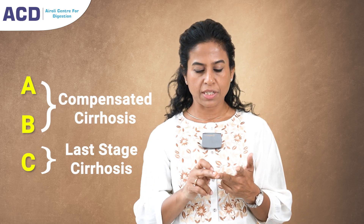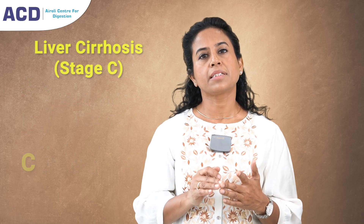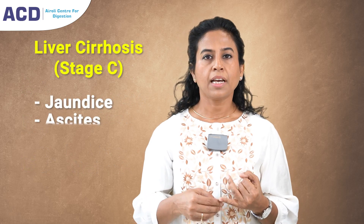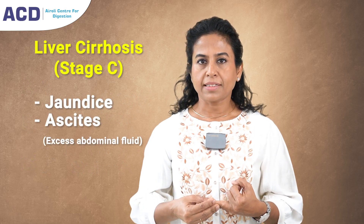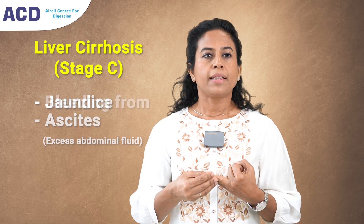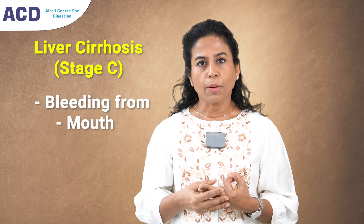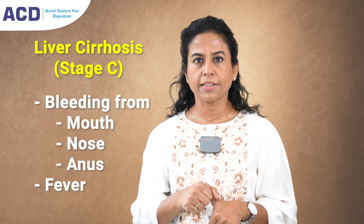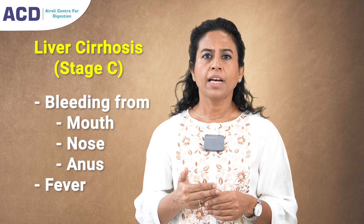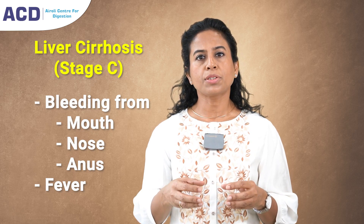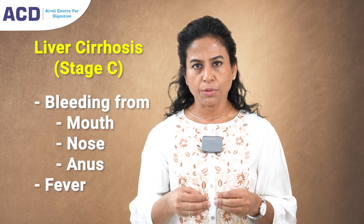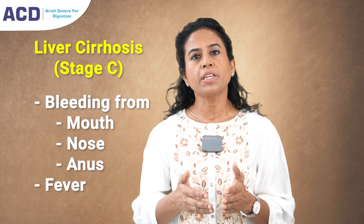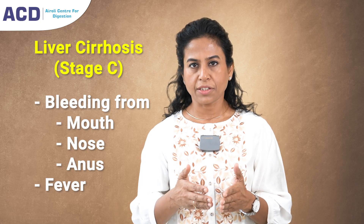Stage C presents as jaundice, ascites — that is fluid in the abdomen — bleeding from the mouth, bleeding from the nose, bleeding from the anus, and fever. These are the basic symptoms of liver cirrhosis, and they usually appear in the last stage.